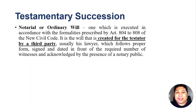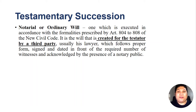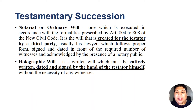Number one, we have the notarial or ordinary will, which is executed in accordance with the formalities prescribed by Articles 804 to 808 of the New Civil Code. It is the will created for the testator by a third party, usually his lawyer, which follows proper form, signed and dated in front of the required number of witnesses and acknowledged by the presence of a notary public.